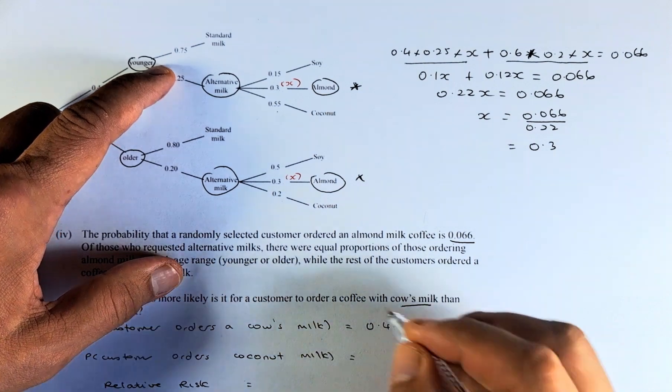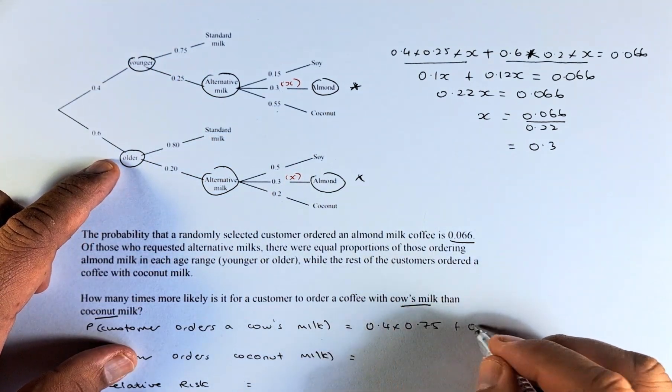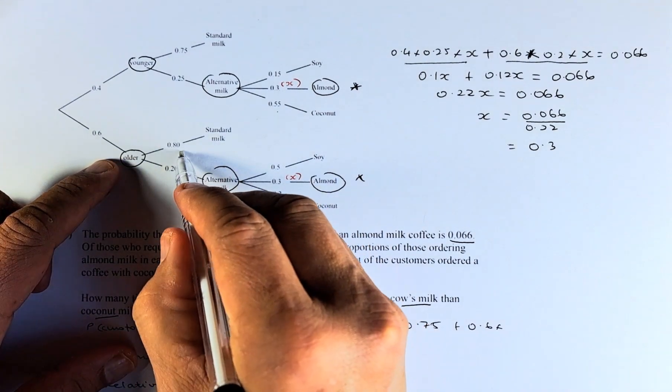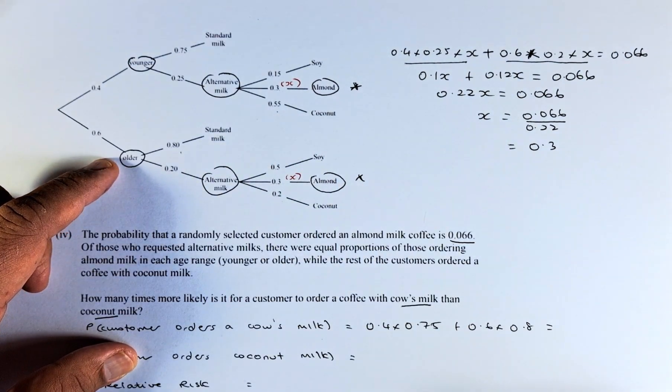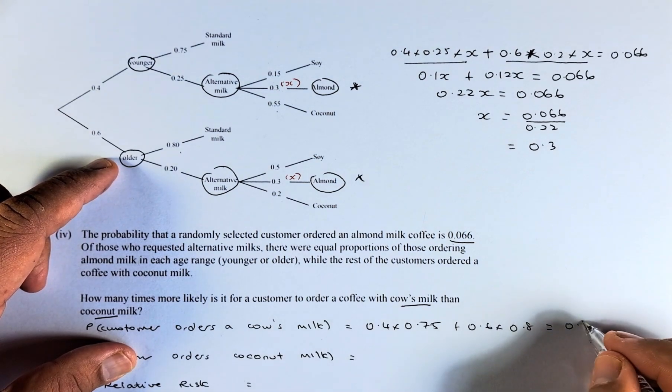And then the other possibility is the older people, 0.6 x 0.8. Put in your calculator and the answer is going to be 0.78.